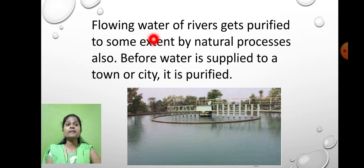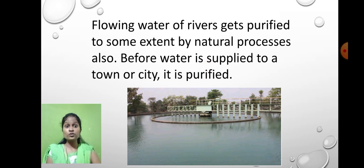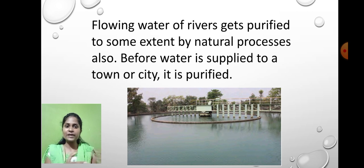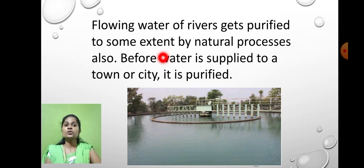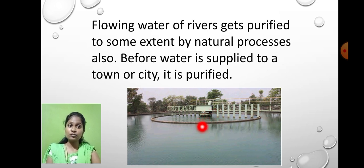The flowing water of a river gets purified to some extent by natural processes, so flowing river water is relatively safe for consumption. Before water is supplied to towns and cities, it must be purified. The water is purified at the water treatment plant, and then this purified water is supplied to towns and cities.